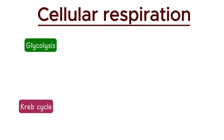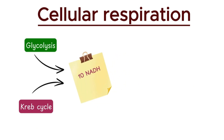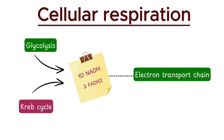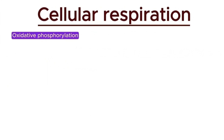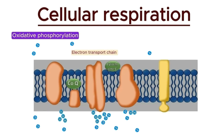In total, for the first two stages of cellular respiration, we have collected twelve electron carriers — ten NADH and two FADH2 molecules. These molecules then enter the electron transport chain to yield further energy. The third stage of cellular respiration, oxidative phosphorylation, involves the electron transport chain and ATP synthase. The electron transport chain consists of four complexes, along with ATP synthase.